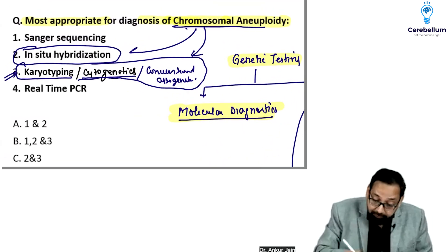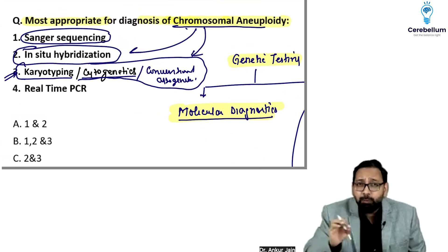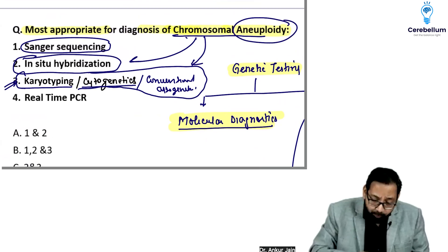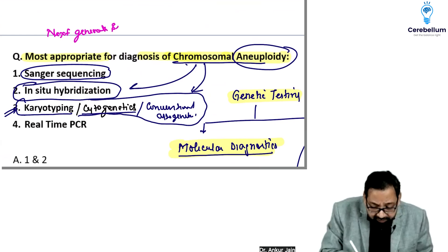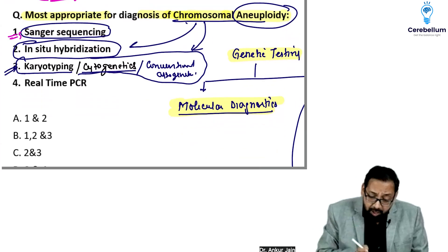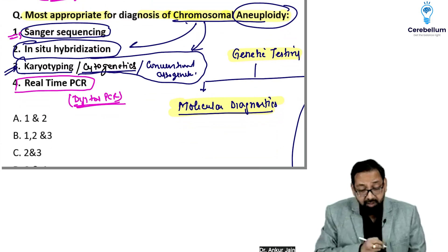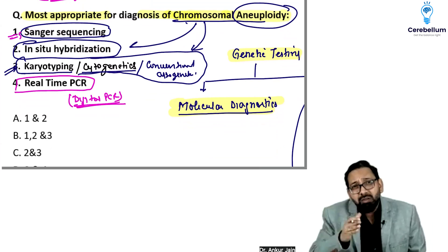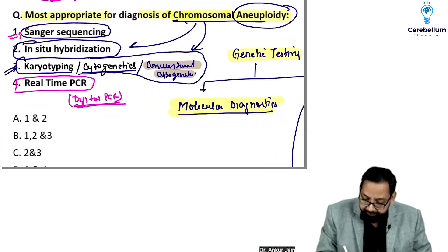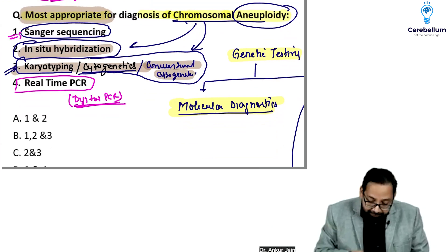What about other options? Sanger sequencing can diagnose changes in nucleotide sequence. We can detect trisomy or aneuploidy with next-generation sequencing, not Sanger sequencing. Similarly, we can detect aneuploidy by digital PCR. But they are not commonly used or most appropriate. If they asked most appropriate, I will go with conventional cytogenetics, which is karyotyping, or in-situ hybridization.